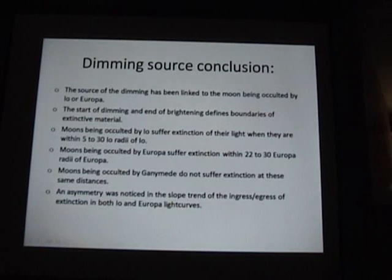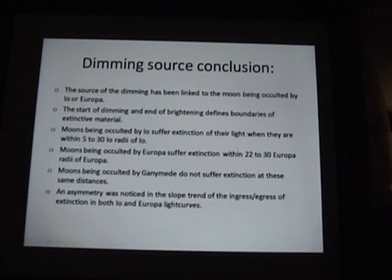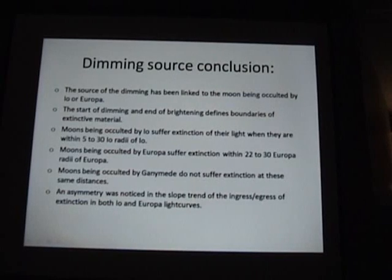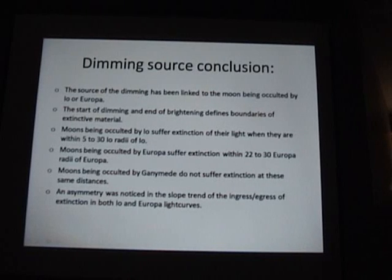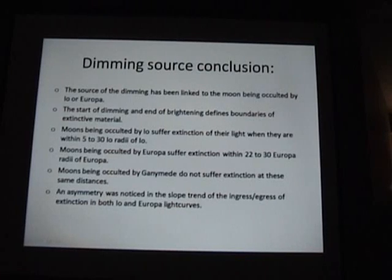Moons occulted by Europa suffer extinction all the way out to 22 to 30 Europa radii. Interestingly, if you go to my paper, at the very end there are references to other bodies of work — these are the exact same numbers they came up with. Brown and Schneider and others doing this work said Europa has about a 25 Europa radii atmosphere, and Io has between 6 and 10. So these are some of the exact same numbers.